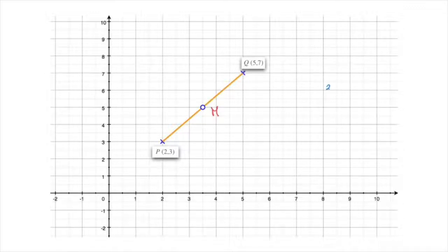That would be 2 plus 5 over 2. That's equal to 7 over 2, which equals 3.5. And we're done. We now have the X coordinate of the midpoint.